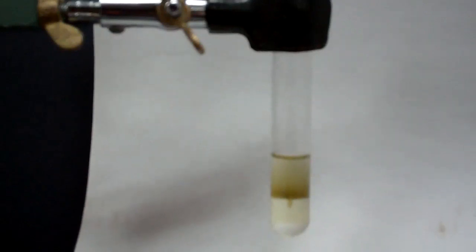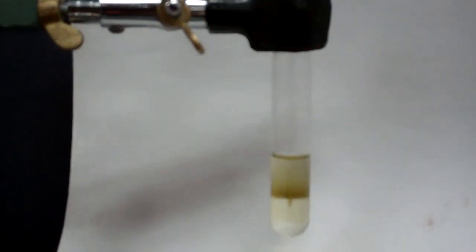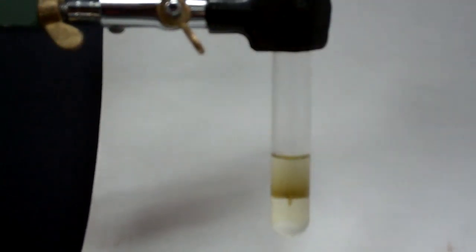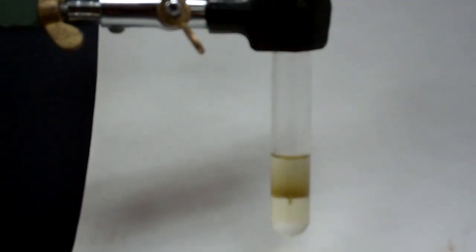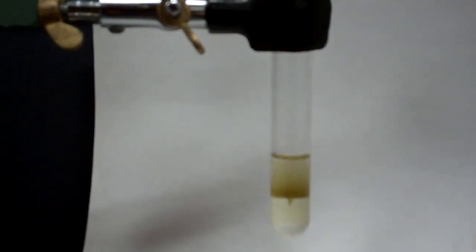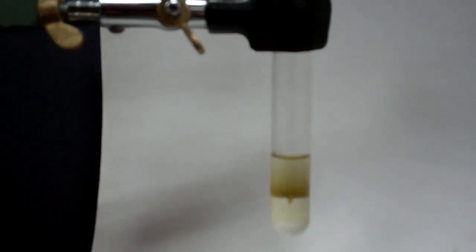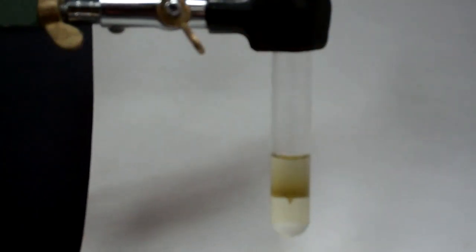If you do not form this boundary, this dark brown ring, then that means you do not have nitrate in your sample. The key to this is just being very steady and allowing that acid to trickle down the side to make sure that you do not disturb that boundary so that the ring has a chance to form.